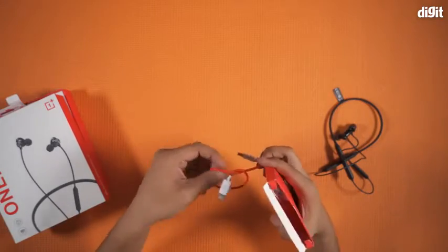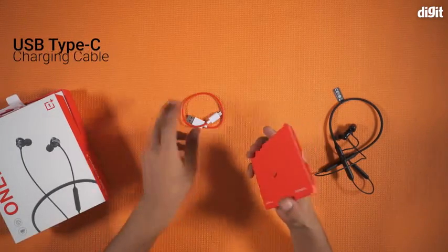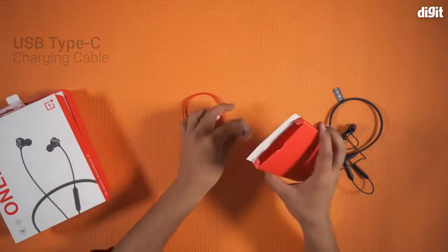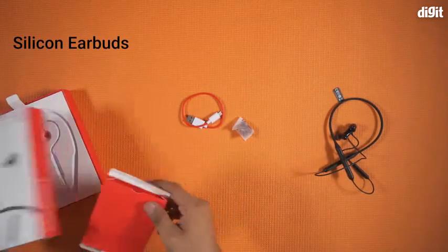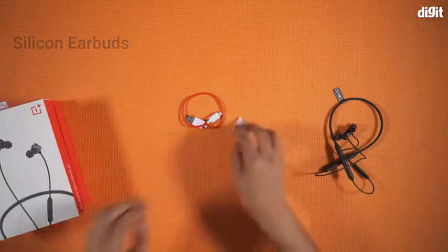In the smaller box, you will also find a charging cable and two sets of ear tips. And that's all you will find inside the box of the OnePlus Bullets Wireless Z.